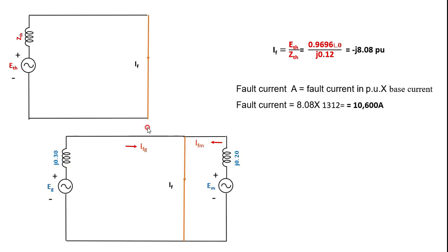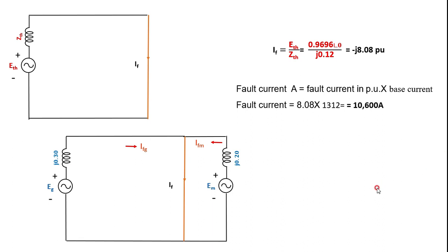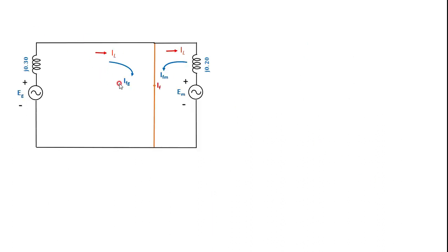Redrawing the fault condition diagram of the network: at the fault point, the total fault current is contributed from both the generator and the motor. Apart from the fault current components IFG and IFM, there is also the pre-fault load current IL. Using the parallel branch current divider method, I will calculate IFG and IFM — the fault current contributions from the generator and the motor.